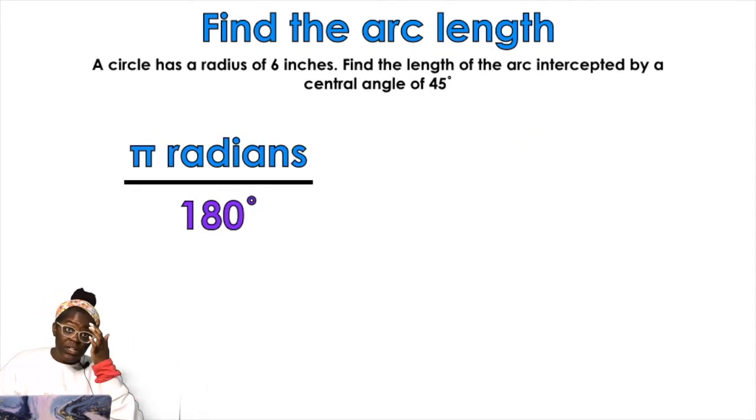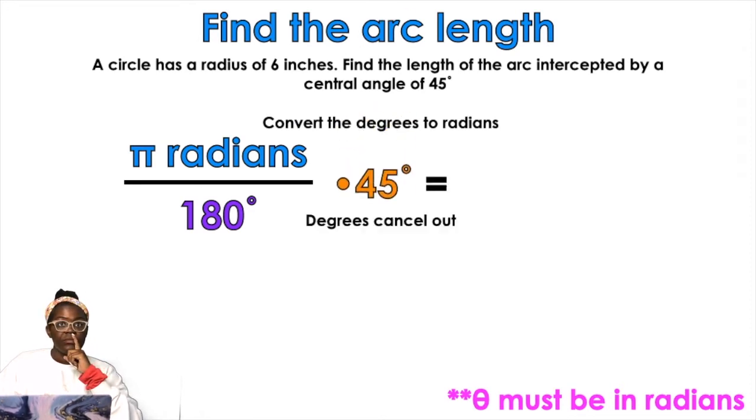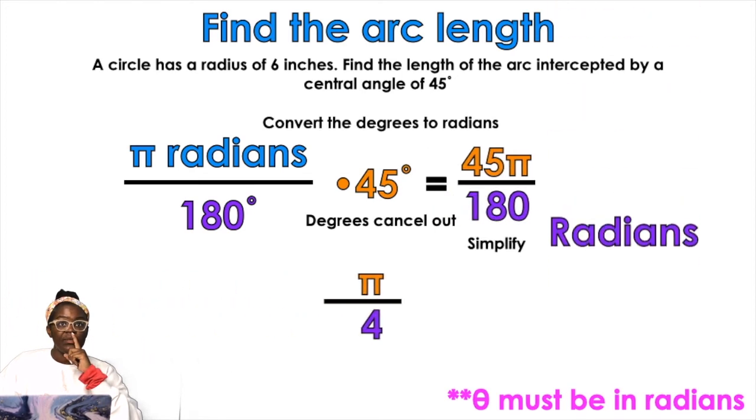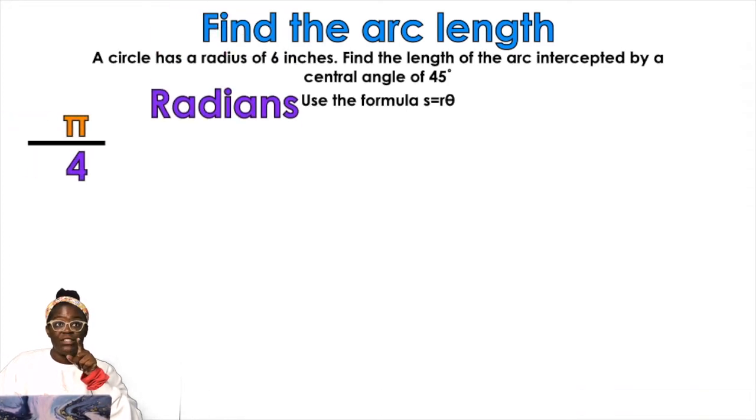So a circle has a radius of 6 inches. Find the length of the arc intercepted by a central angle of 45 degrees. Theta must be in radians. 45 degrees, so we're going to convert that to radians. Degrees cancel out. 45 pi over 180, we're going to simplify that to pi over 4 radians. We're going to take that pi over 4 radians and plug it into the formula.